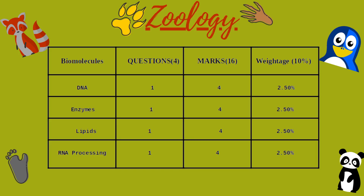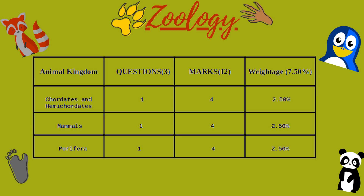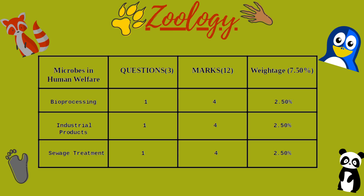Now let's discuss the units with around 12 marks: Animal Kingdom, Microbiology, and Biotechnology. Animal Kingdom has 3 questions and marks weightage of 12, with topics: Chordates and Hemichordates (1 question, 4 marks), Mammals (1 question, 4 marks), and Porifera (1 question, 4 marks). Biotechnology has 3 questions and marks weightage of 12, with topics: Artificial Vector (1 question, 4 marks) and Phage (2 questions, 8 marks). Microbes and Human Welfare has 3 questions and marks weightage of 12, with topics: Bioprocessing (1 question, 4 marks), Industrial Products (1 question, 4 marks), and Sewage Treatment (1 question, 4 marks).